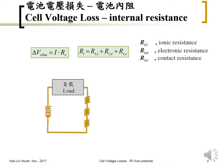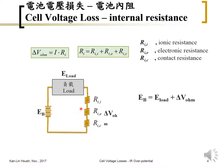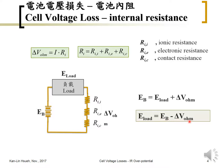If we assume the fuel cell or battery generates voltage Eb, the voltage loss delta V ohm means the electrical load or appliance actually obtains voltage E_load. The relation between these three voltages is: the voltage generated from the fuel cell equals the voltage applied to the electric load plus the ohmic voltage loss. So E_load = Eb − delta V ohmic.